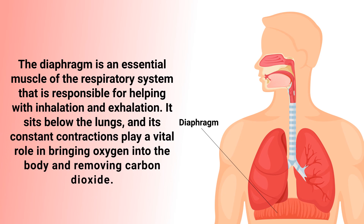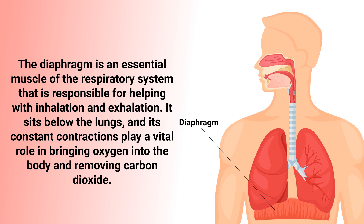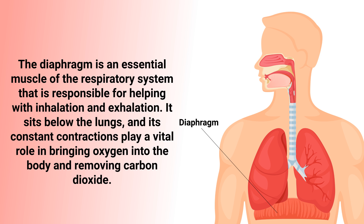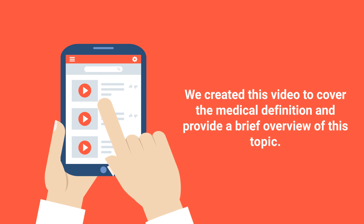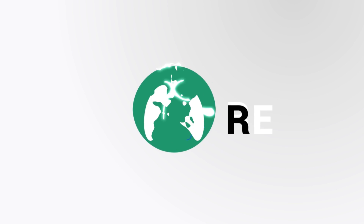The diaphragm is an essential muscle of the respiratory system that is responsible for helping with inhalation and exhalation. It sits below the lungs and its constant contractions play a vital role in bringing oxygen into the body and removing carbon dioxide. We created this video to cover the medical definition and provide a brief overview of this topic.